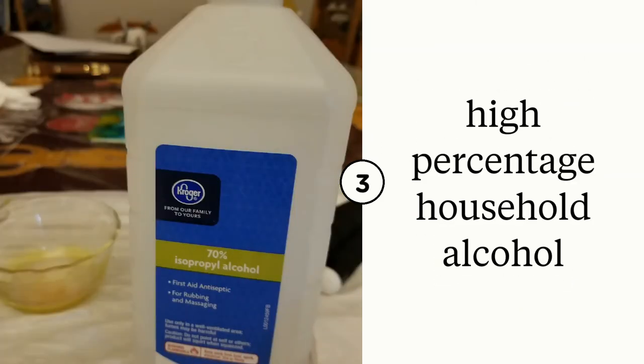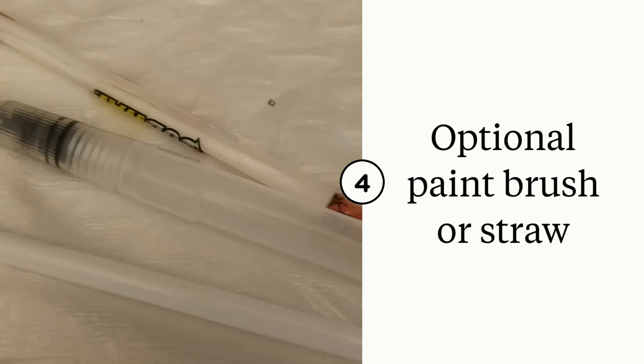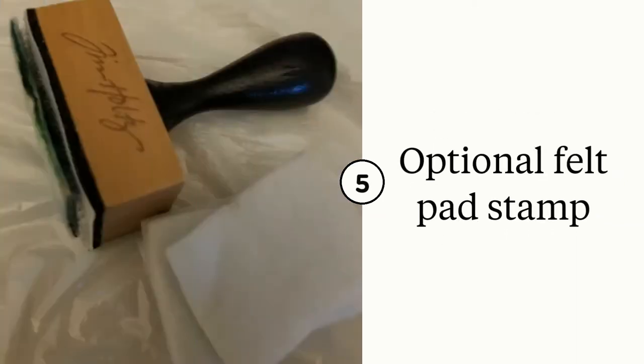A high percentage isopropyl alcohol can be used for cleanup or even for blending. A dedicated paintbrush or a plain drinking straw can be useful but are not essential. A felt pad stamp or even a makeup sponge may be used for stippling and texture.